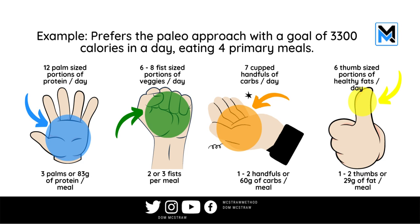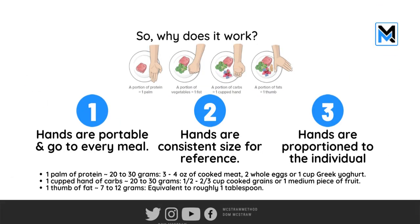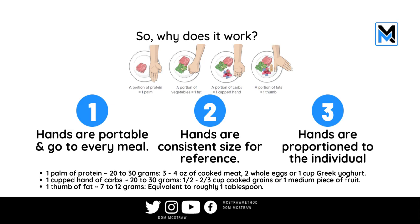When you take those numbers — the 83 grams of protein, the veggies, the carbohydrates — and multiply them out by four and nine calories per gram, with no alcohol, you end up coming to that 3,300 calories a day. That's it in a nutshell. This way it's simple and easy for them to get and plate.